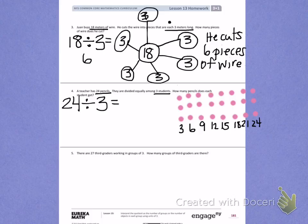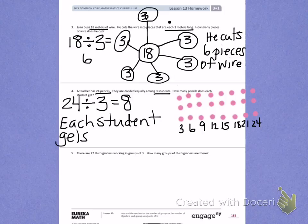I can see that in each row there are 8 dots, so that tells me that each student is going to get 8 pencils. Each student gets 8 pencils.